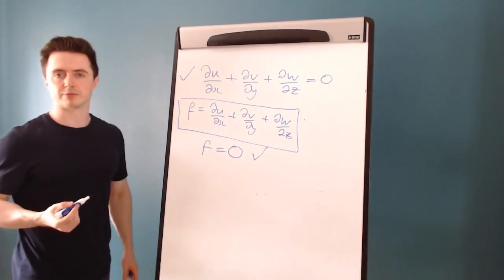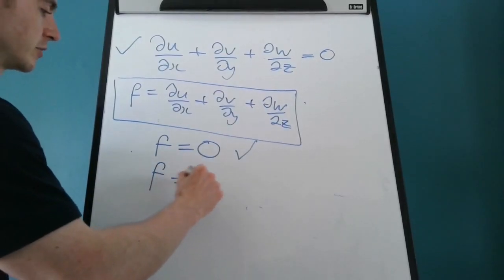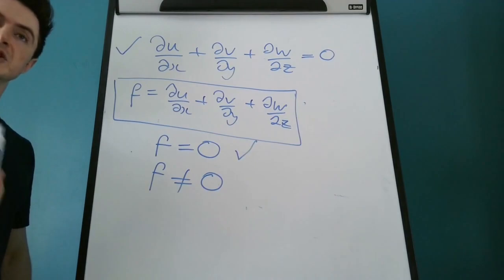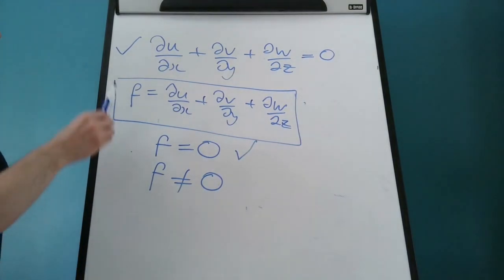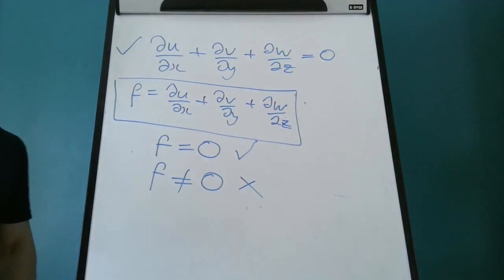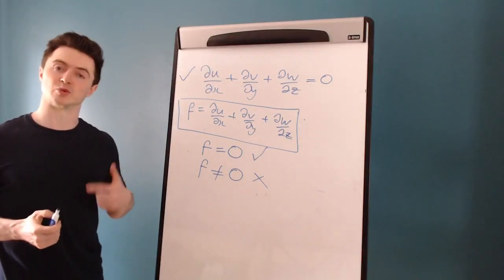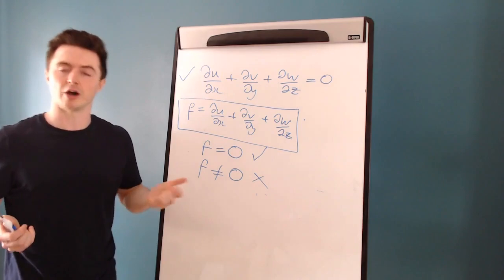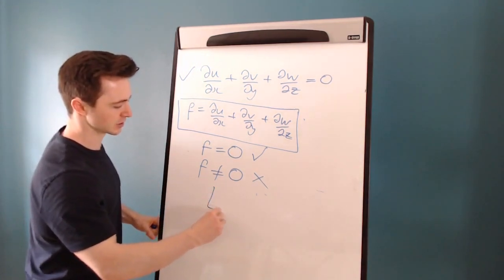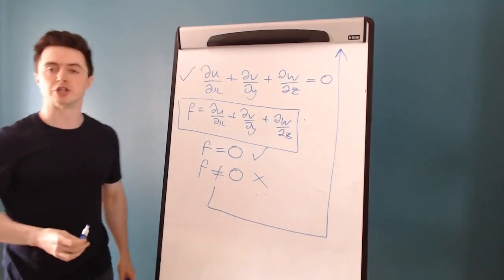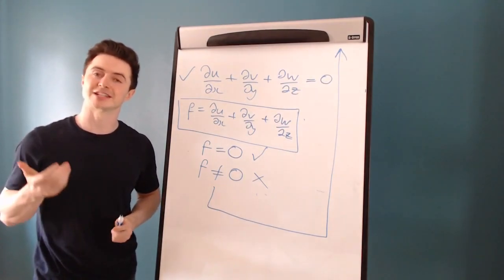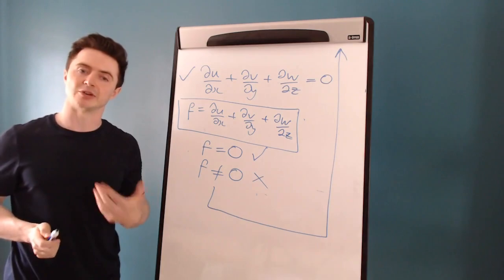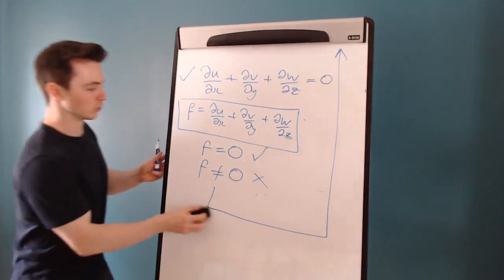If f equals zero, the algorithm has converged. But if f is not equal to zero, that means the u, v, and w velocity components satisfy the Navier-Stokes equations — because we solved them to calculate u, v, and w — but they don't satisfy the continuity equation. This means we have the incorrect velocity field. The velocity field was generated by our input pressure field, so we have to make a new choice for that pressure field. Our input guess was wrong, and we have to go back to the start of the algorithm and choose a new guess for the pressure field. This is the basis of the SIMPLE loop: choose the pressure field, go through the algorithm, evaluate f, and keep looping until we have our solution.